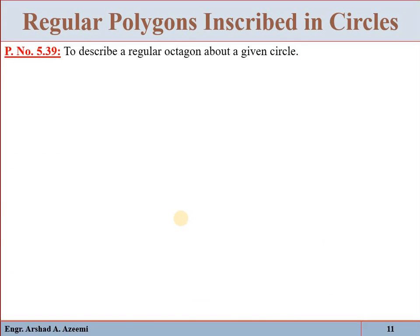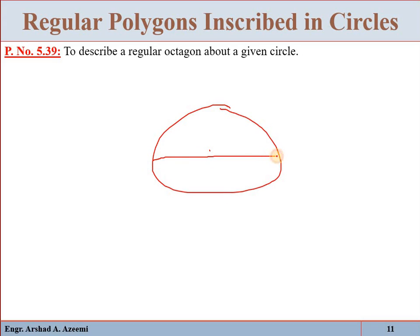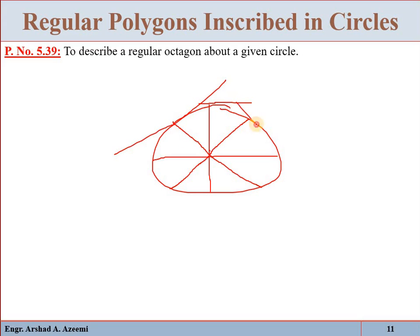To describe a regular octagon about a given circle: draw the horizontal diameter and the vertical diameter. Then draw a diameter bisecting one angle and another diameter bisecting the adjacent angle, giving eight equally spaced points. At each of these eight points, draw the tangents. Once you draw the tangent at all points, you will get the required octagon about the given circle.